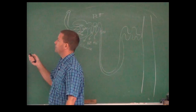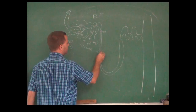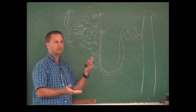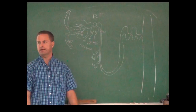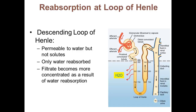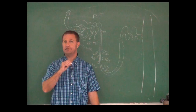In the descending loop of Henle, we're reabsorbing water but not reabsorbing salts — special receptors allow water to move out but not salt. So if we're just pulling water out, the osmolality of what's left goes up — from 300 to 350 to 650 to 750 milliosmoles. You just need to know the trend: it's getting saltier as we go down because we're pulling water out. The descending limb is permeable to water but not to salt.